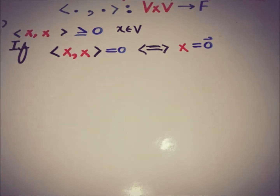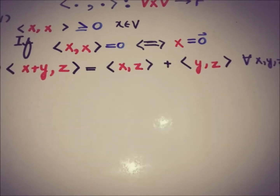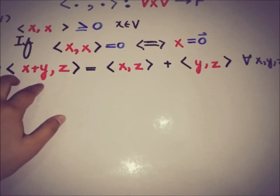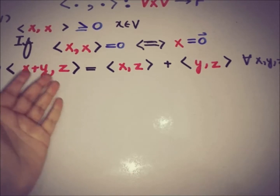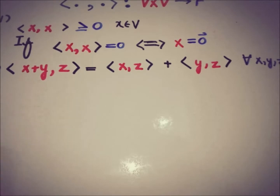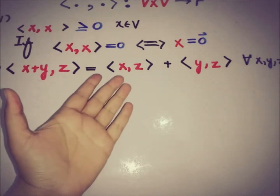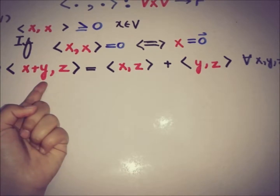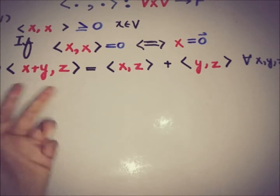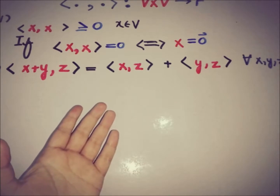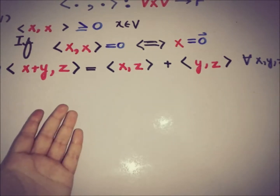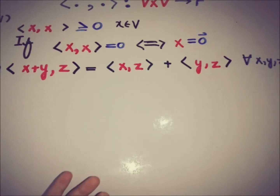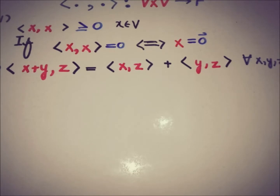Moving toward the second property: the inner product of the sum of two elements from the vector space with a third element can be written as the inner product of the first with the third, plus the inner product of the second with the third. This holds for all elements of the vector space V.